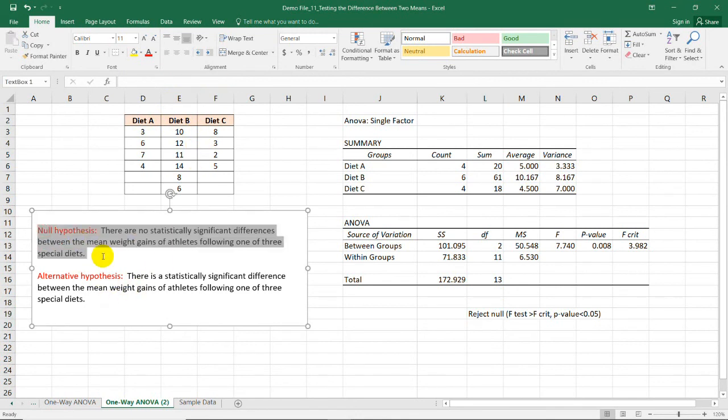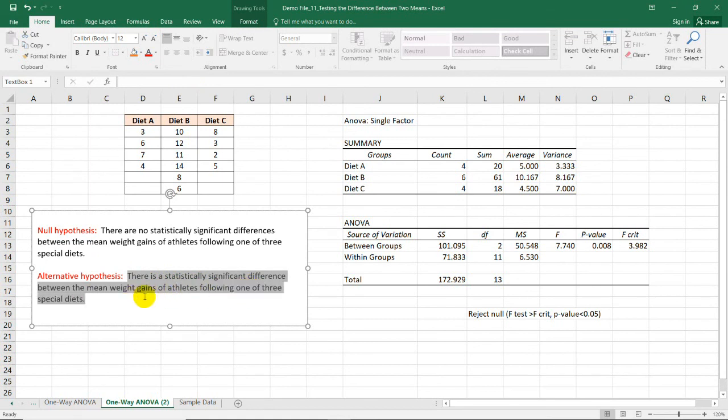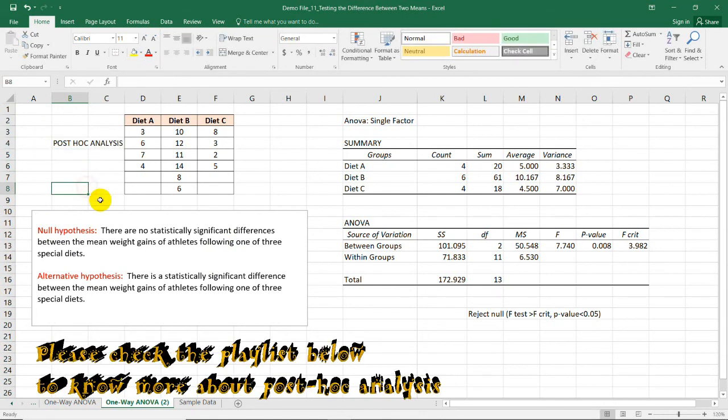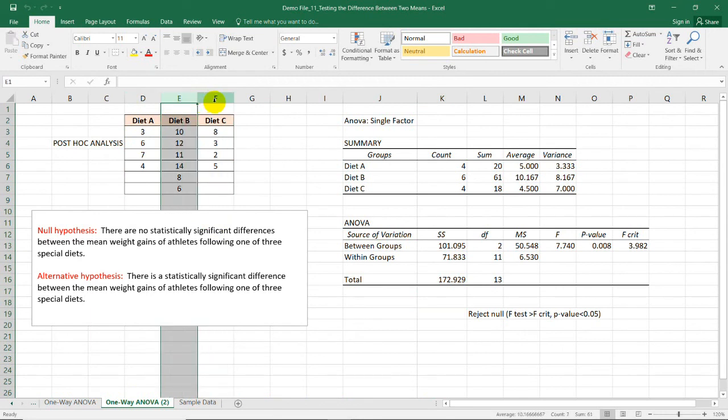So, null hypothesis was rejected. There is a statistically significant difference between the mean weight gains of athletes following one of the three special diets. But if you would ask me which is different from the other, I won't be able to answer you because for this situation, we need what we call post-hoc analysis. Yes, you heard me right. Whenever the null hypothesis is rejected in analysis of variance, post-hoc analysis is needed if you want to determine which particular groups have difference in their means. For instance, is diet A different from diet C? Is diet B different from diet C? All this will be discussed in the next video.